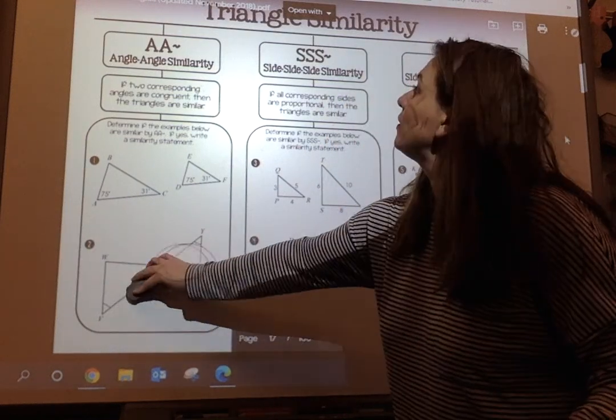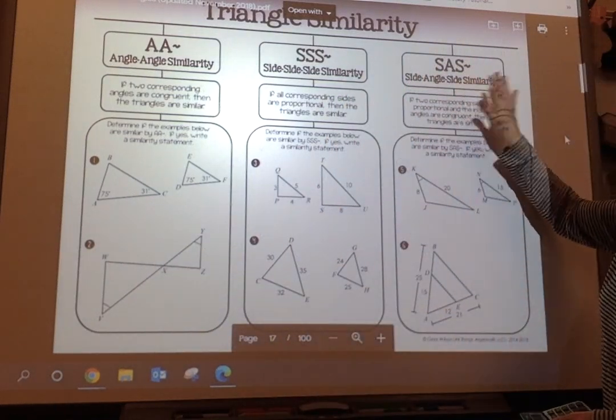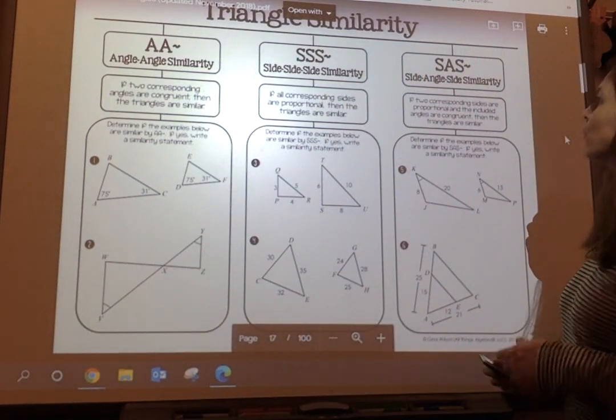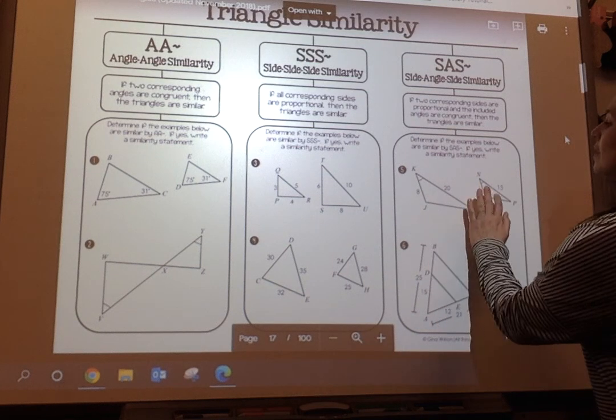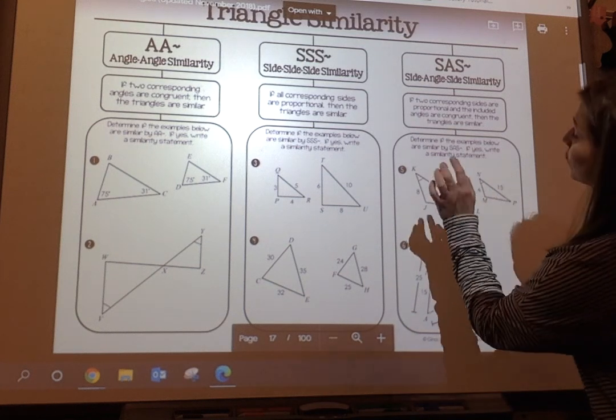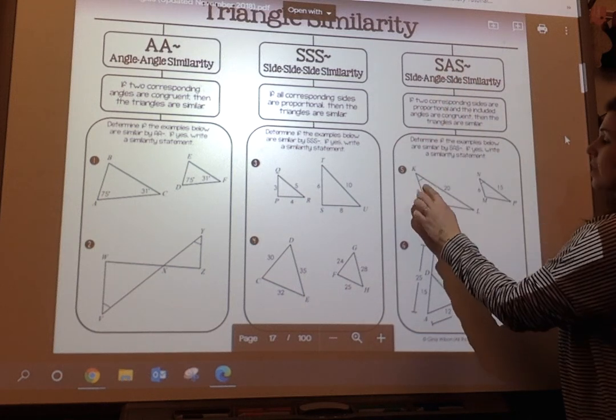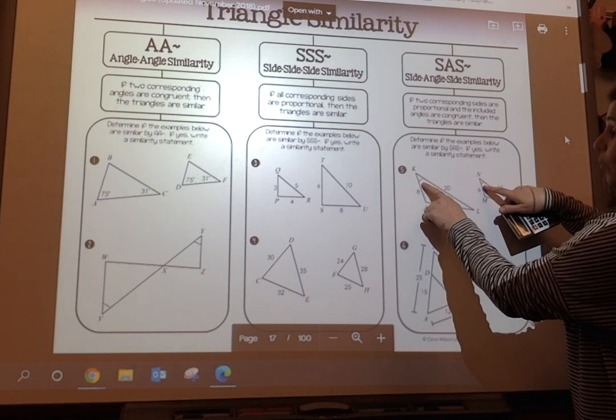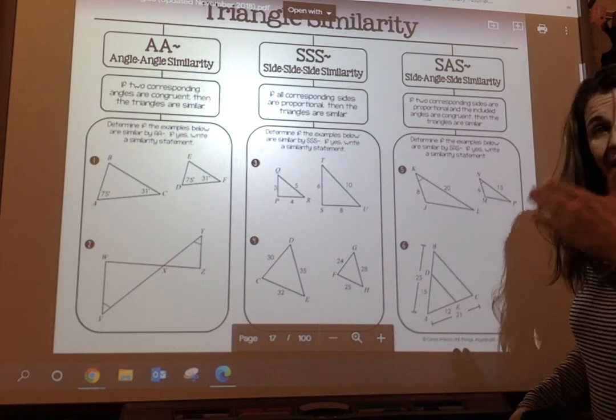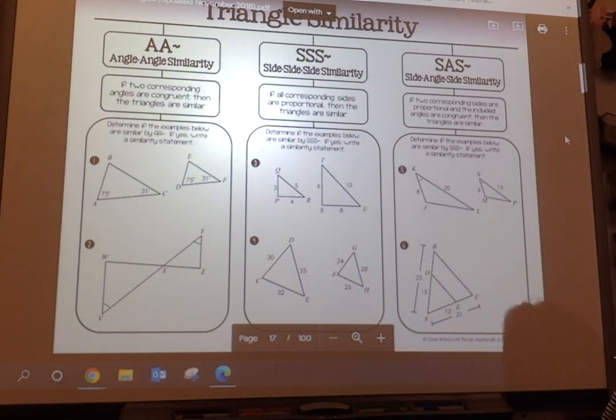And then let's look at our last one: we have side-angle-side. So again, if you know that two corresponding sides are proportional and you know that included angle—remember it has to be included, that's that A in between the sides—if this angle is congruent and these sides are proportional, then yes, we can make a similarity statement.